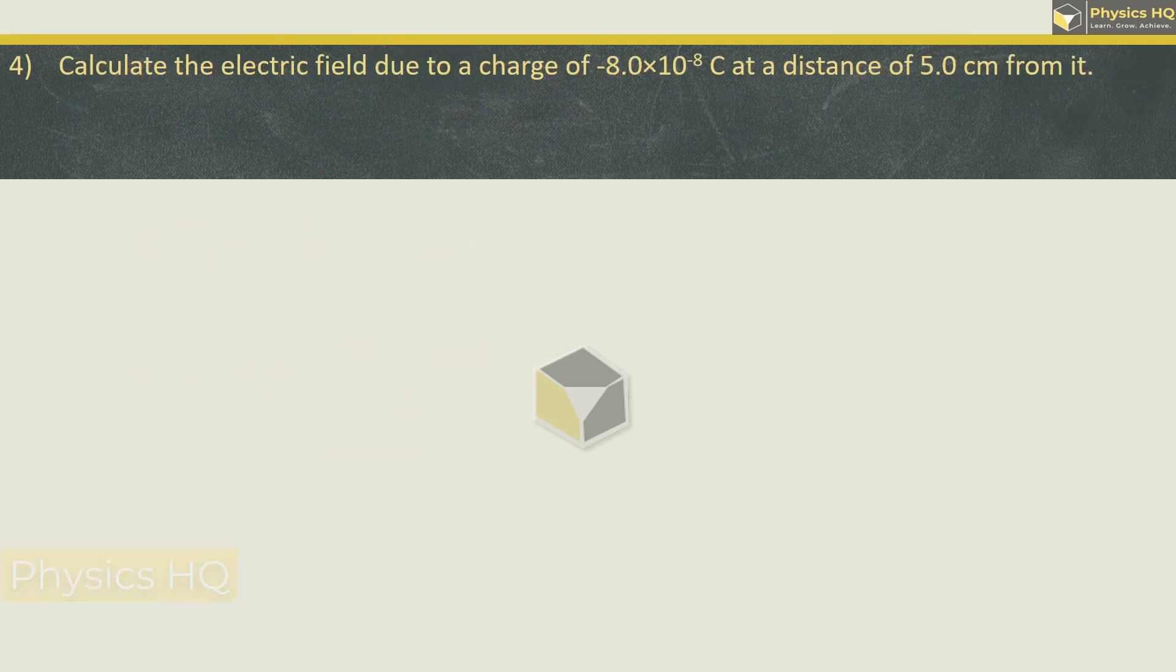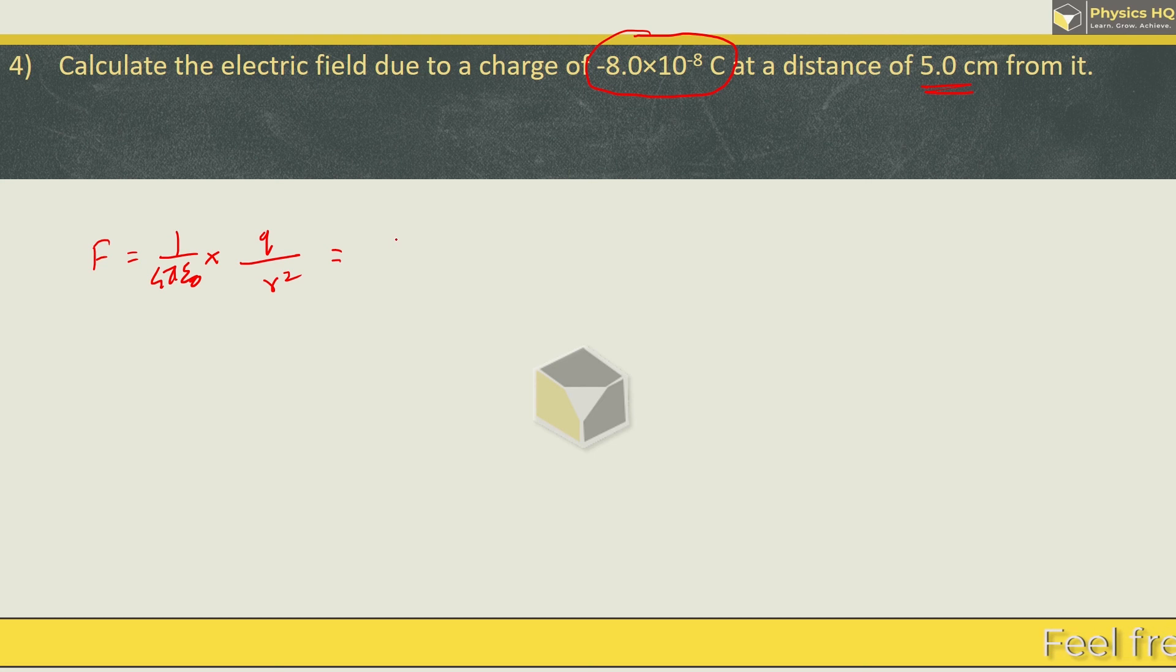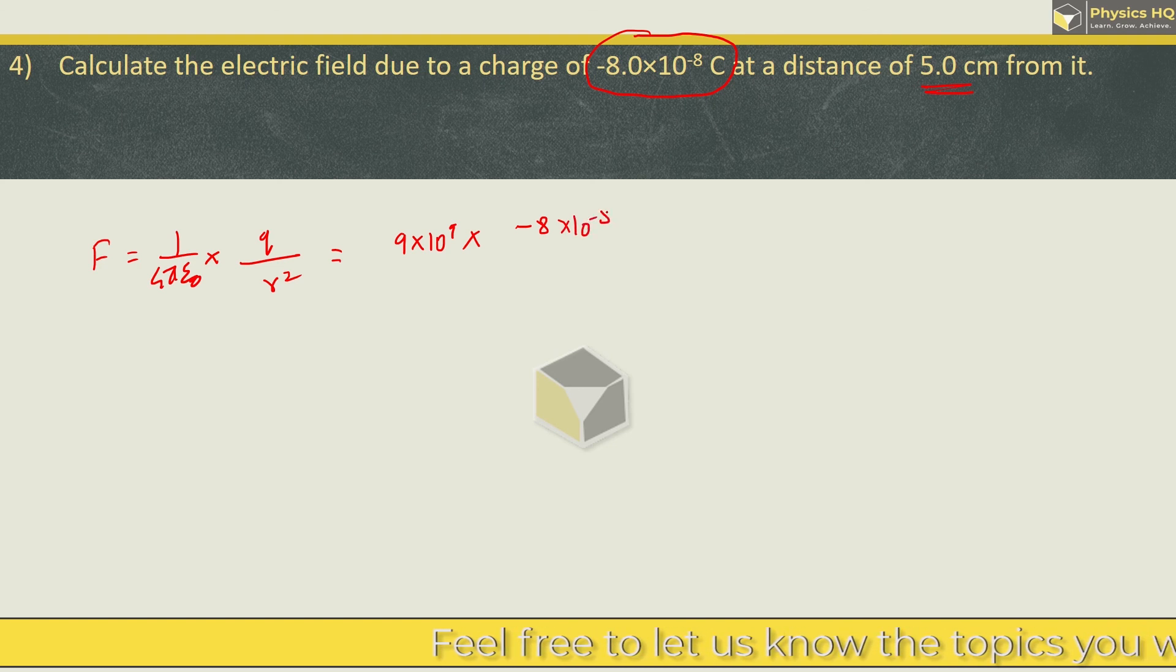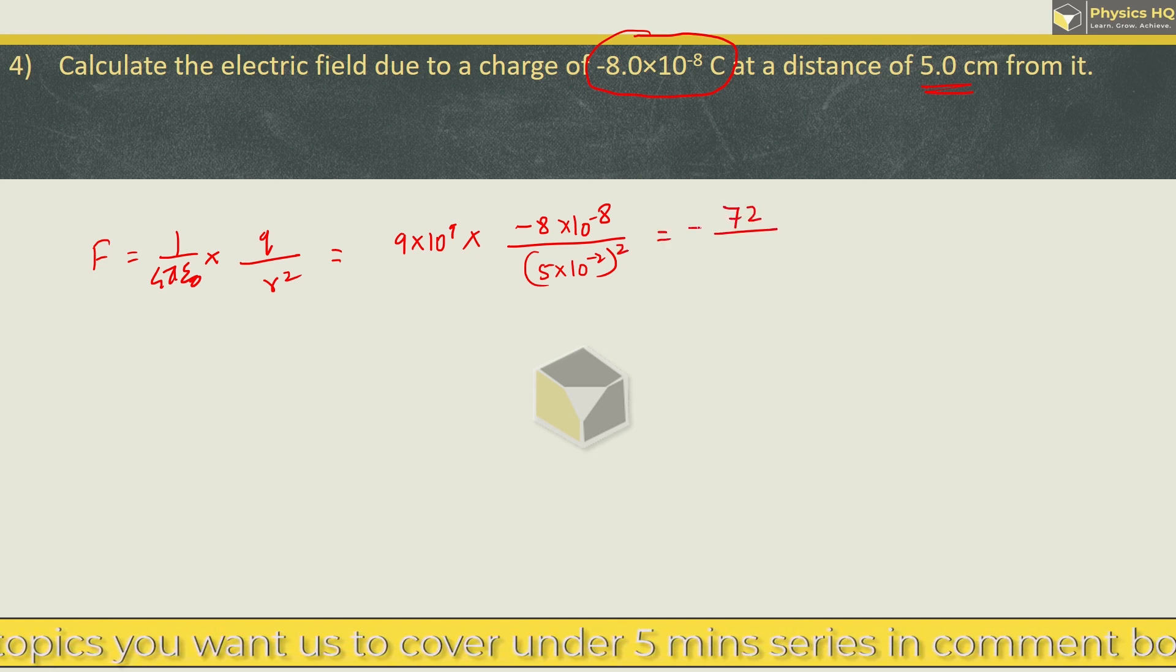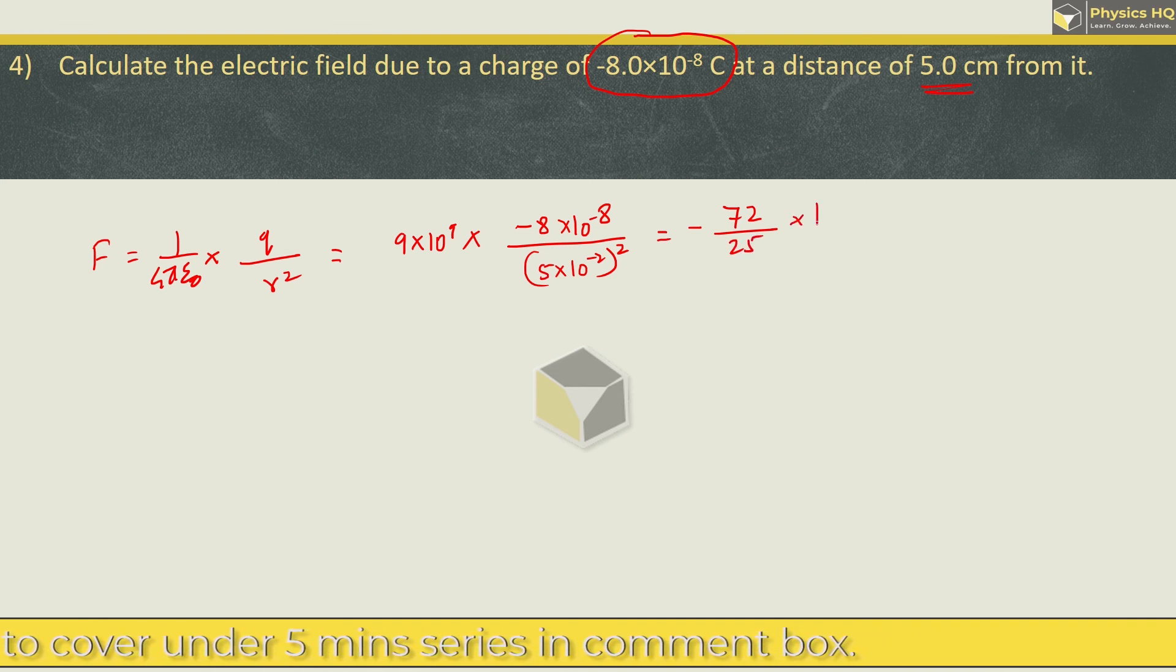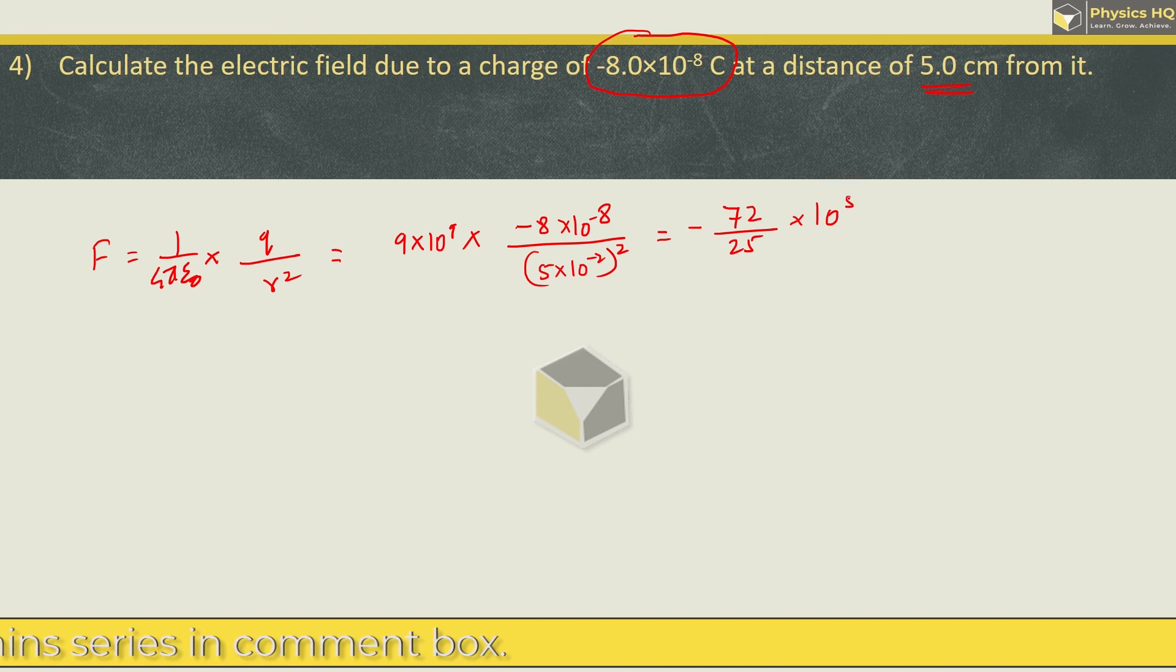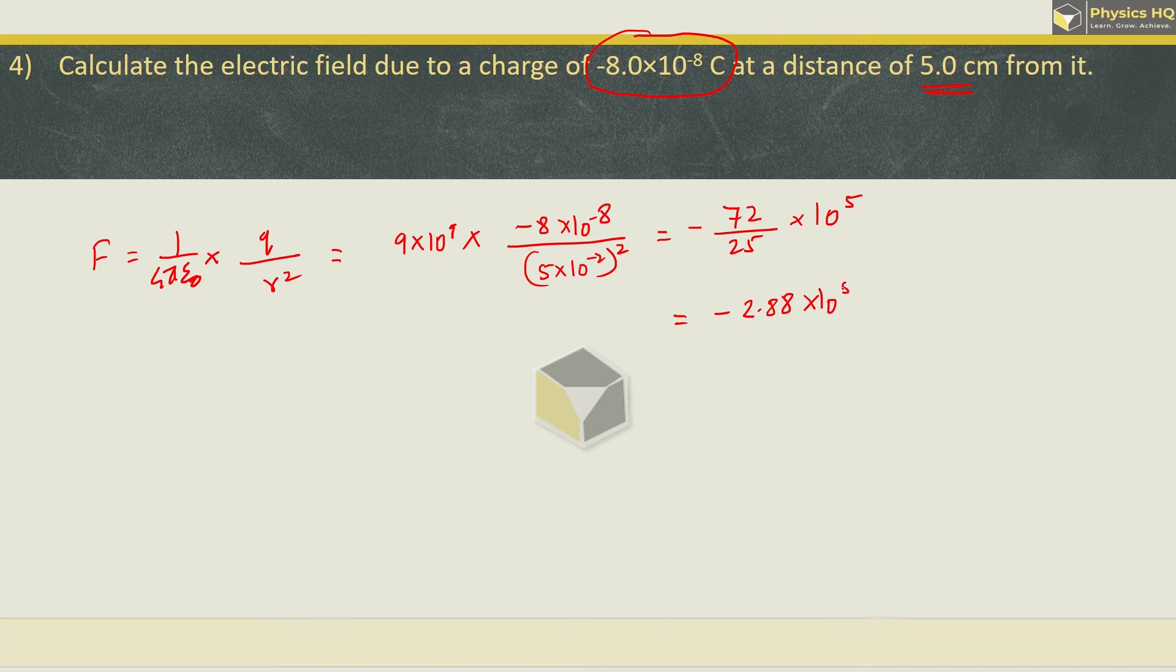Let us check out the next sum. Calculate the electric field due to a charge of minus 8 into 10 raise to minus 8 coulomb at a distance of 5 centimeter from it. Force formula is 1 upon 4 pi epsilon 0 into q upon r square. 1 upon 4 pi epsilon 0 is 9 into 10 raise to 9, charge is given as minus 8 into 10 raise to minus 8 divided by distance 5 into 10 raise to minus 2 meter whole square. This is equal to 72 divided by 25 into 10 raise to 5. When you simplify this you will get 2.88 into 10 raise to 5 Newton per coulomb.